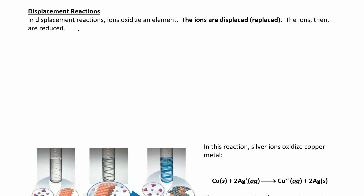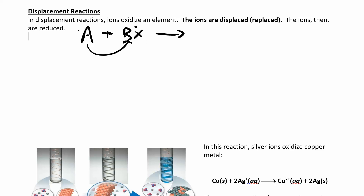The general format for these reactions looks like A — that's going to be your metal — reacting with BX. A is going to replace B in the solution, B is going to go off by itself, and you're going to end up with AX plus B.